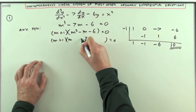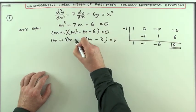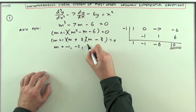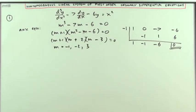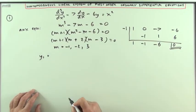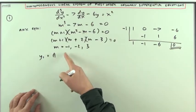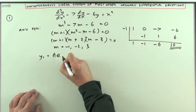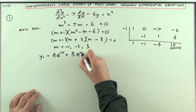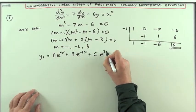Then factorize that quadratic: m times m, looking for factors of 6 — 2 and 3, with the negative going to the 3, so that must be plus — giving the values for m of negative 1, negative 2, and 3. So the complementary function, which I'll call y1, would be any linear combination of these three solutions: e to the negative x, e to the negative 2x, and e to the 3x.